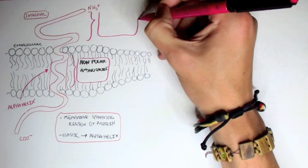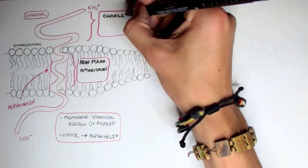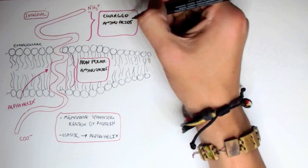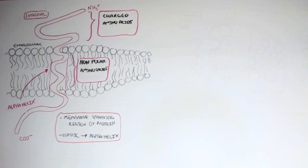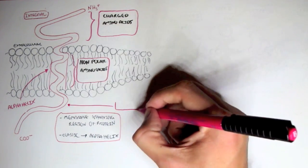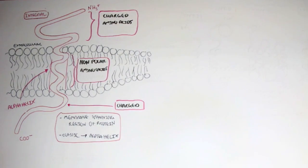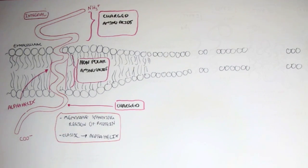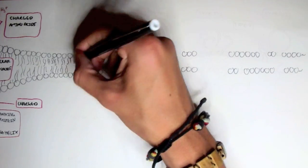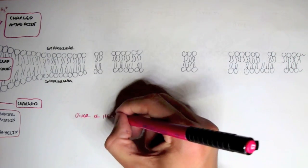Around the outside of the membrane, the amino acids are charged because they can be hydrophilic. The same applies to the carboxyl section — it also consists of charged amino acids. There are a variety of alpha helix spanning proteins, and now let's look at the six different types.